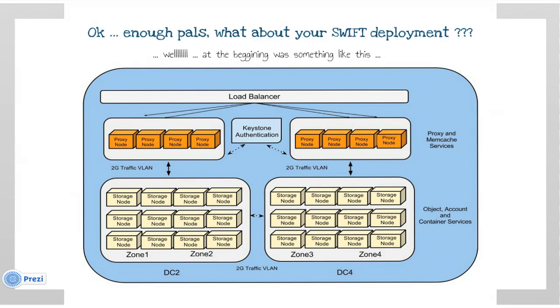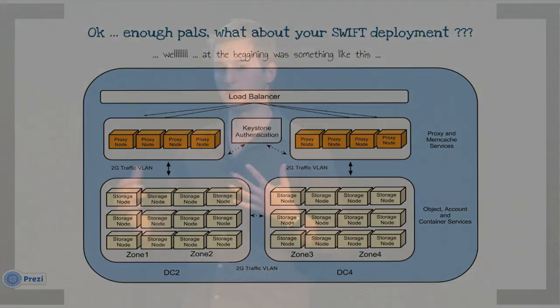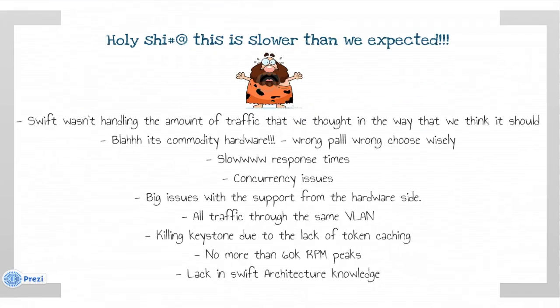We deployed 12 proxy nodes divided into groups that expose the HTTP Swift API and have memcache configured to cache ring metadata. A load balancer layer composed of F5 VIPs balances traffic between the proxy groups. Keystone sits in the middle of the proxy groups and is a really important part of our infrastructure, because we have about 100 departments inside MercadoLibre with internal users. We needed the flexibility to grant access to many cloud services depending on department and user roles, so we integrated Keystone with Swift. All that infrastructure is connected with a single 2G traffic VLAN using two 1-gigabit interfaces per node in bonding mode with link aggregation.